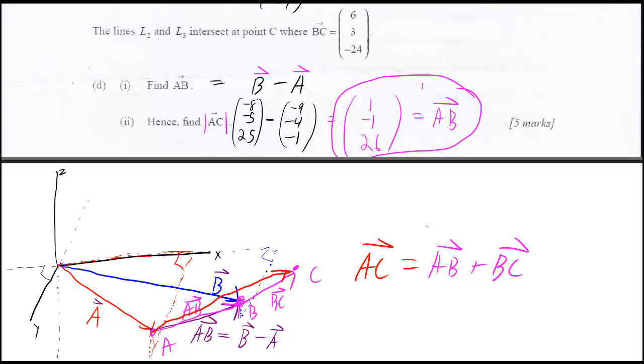So we take AB, which is (1, -1, 26), and add BC, which they're giving to us as (6, 3, -24). And then we get (7, 2, 2). So that's AC.